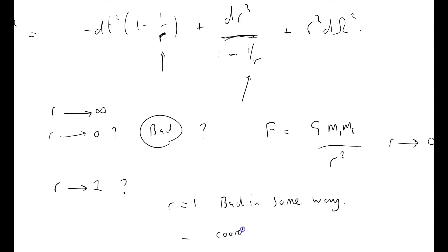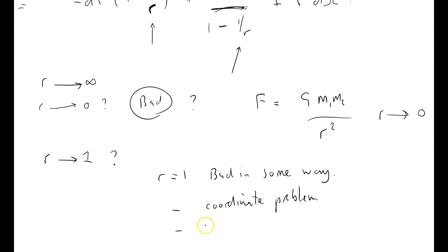It could be a coordinate problem, or it could be an actual physics problem. And we don't know at this stage which one it is. If it's a physics problem, what that means is that there's some kind of kink in space-time or some kind of peculiar behaviour of objects passing through r equals one.